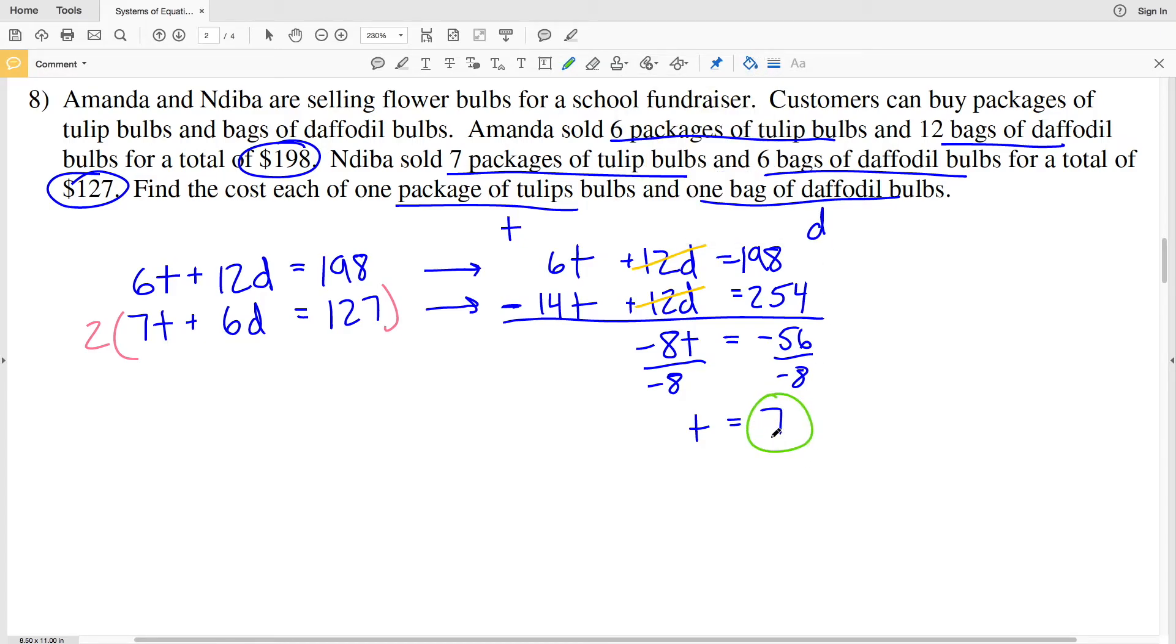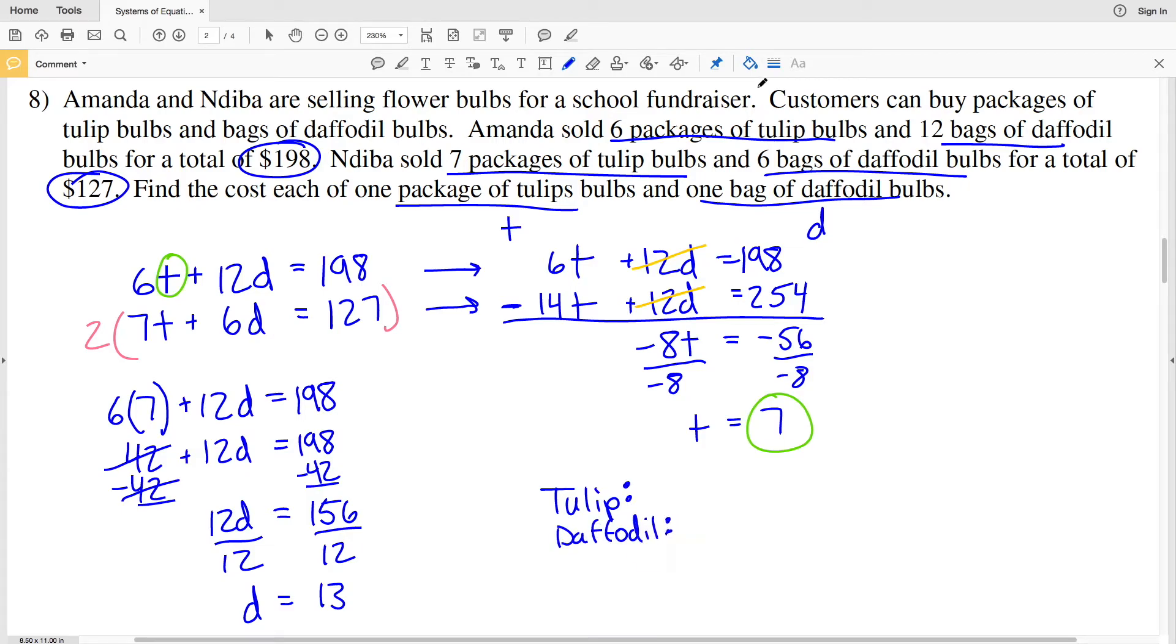So now I can take that 7 and plug it in for any of my equations. Let's plug it into that first equation. So I'll have 6 times T, which we know is 7, plus 12 times D, which is now what we're solving for. That's equal to 198. 6 times 7 is 42. We're adding that to 12D, and that will equal 198. So if I subtract 42 from both sides, I'll get that 12D is equal to 156. And finally, I'll divide both sides by 12 to get my variable D, which is the cost of one bag of daffodil bulbs, and that variable D will equal 13.